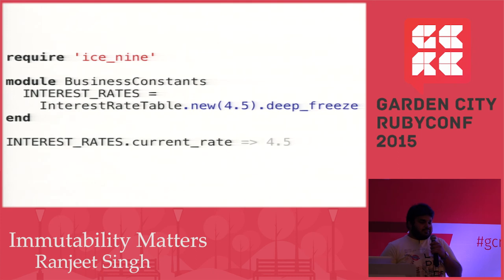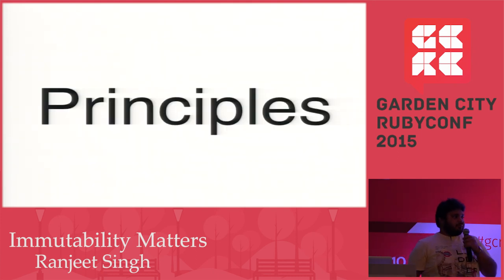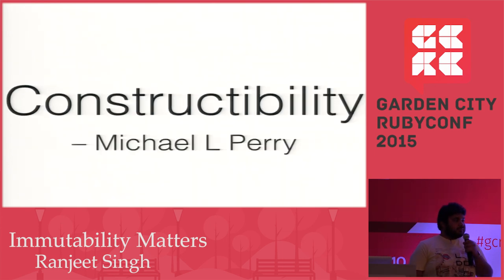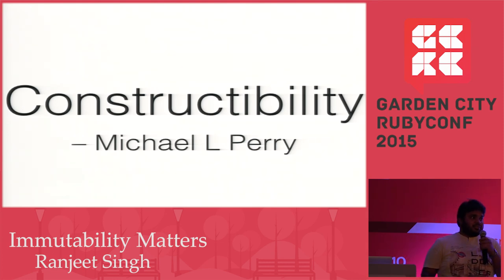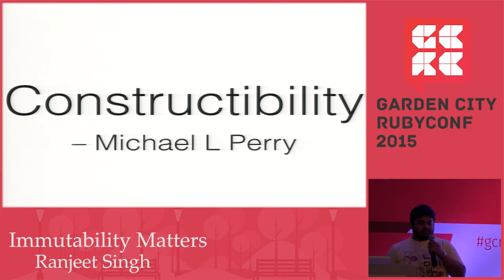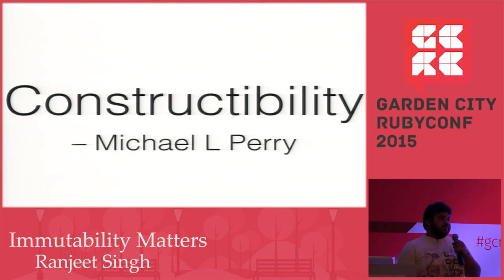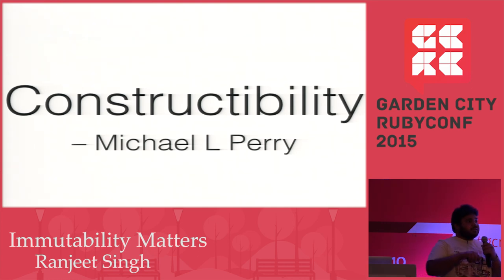Immutability is based on three different principles applied together to build your value objects. The first concept is constructability. Constructability originated in mathematics around the 1950s to 1960s and was later moved into programming and object-oriented principles. Michael L. Perry defined constructability as: in an object graph, whenever you add another object, that object shouldn't have a dependency on any other object not yet added to the object graph.